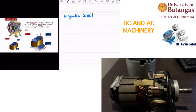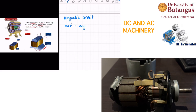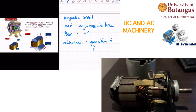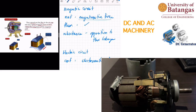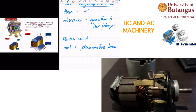MMF is the force that urges the flux to be linked through a certain magnetic path. Reluctance is the opposition to flux linkage. Comparing to an electric circuit: EMF pushes electric charges (creating current), while MMF applies force on magnetic poles to link flux. Resistance opposes current flow, while reluctance opposes flux linkage.